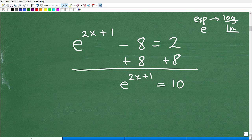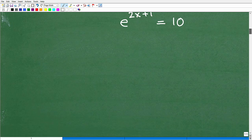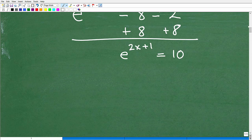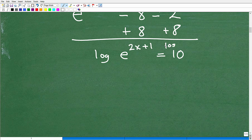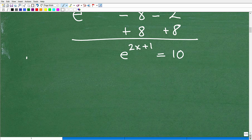and now this gives me e to the 2x plus 1 is equal to 10. All right, now at this stage, I am ready to take the log of both sides.